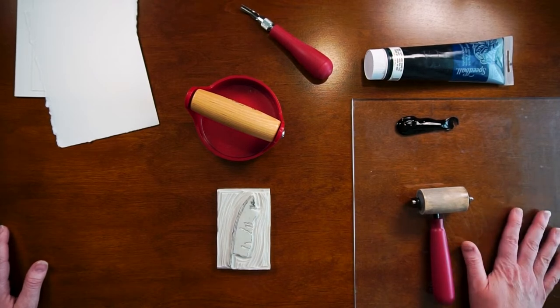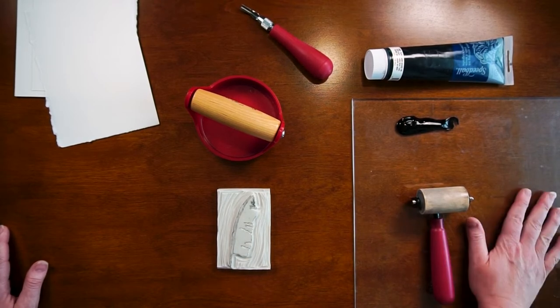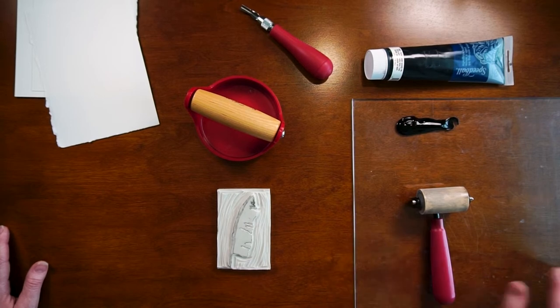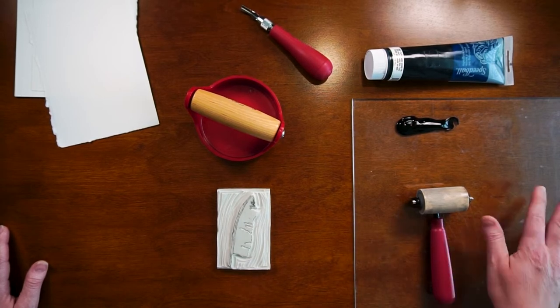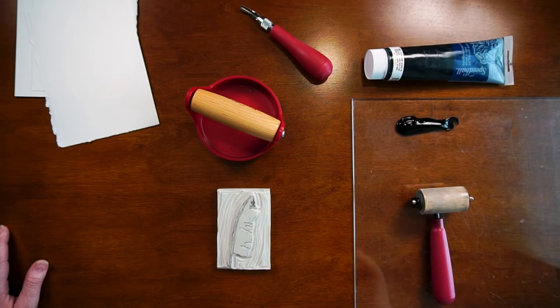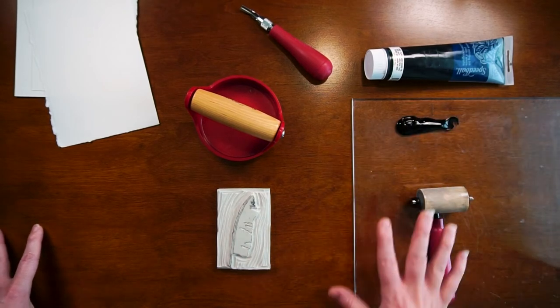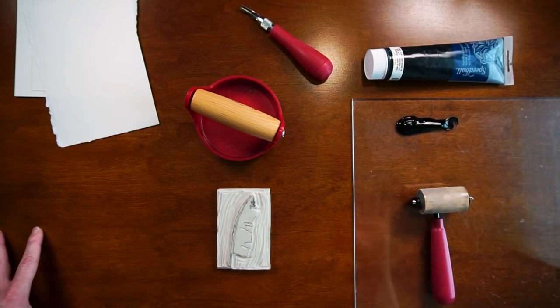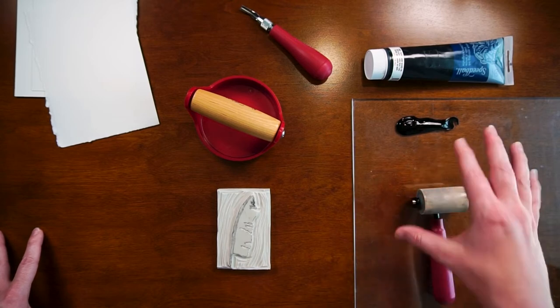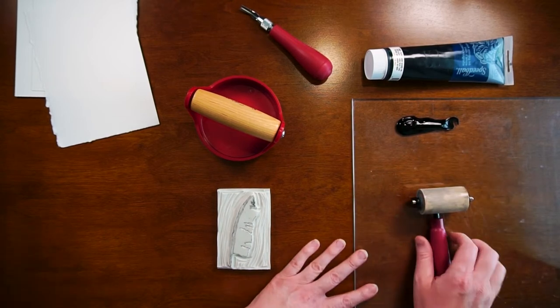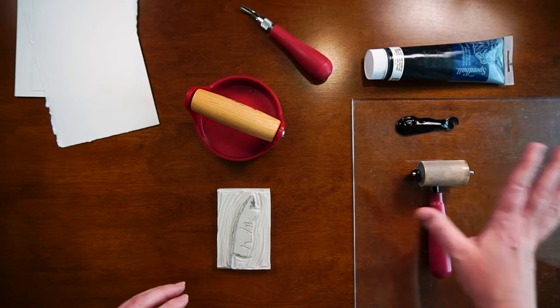I happened to get this at a store that was closing out, so I think I bought this for a dollar. You can take the glass from picture frames, which I've done, but they break really easily. There's all sorts of different surfaces you can use, just something that you can put your ink onto that won't soak through and that won't shift around a bunch.